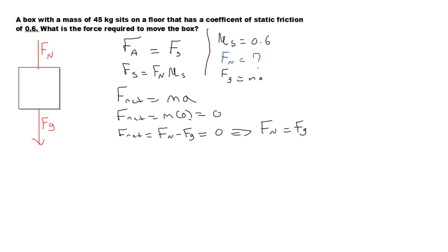So F_n equals mg. Let's do some math then. F_n is 45 times 9.8, so 45 times 9.8 is 441 newtons.